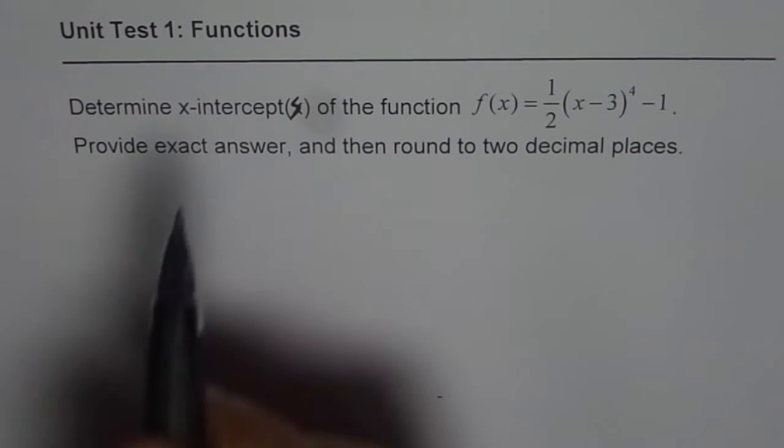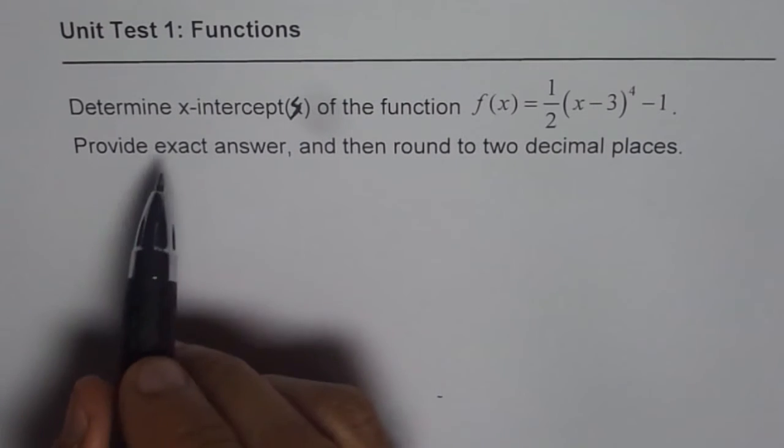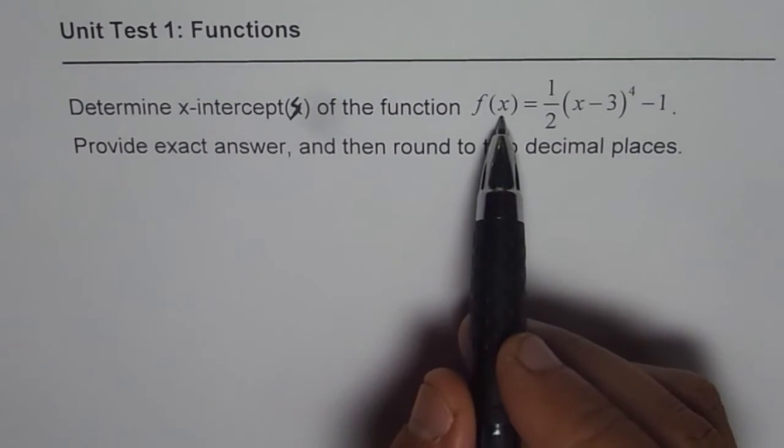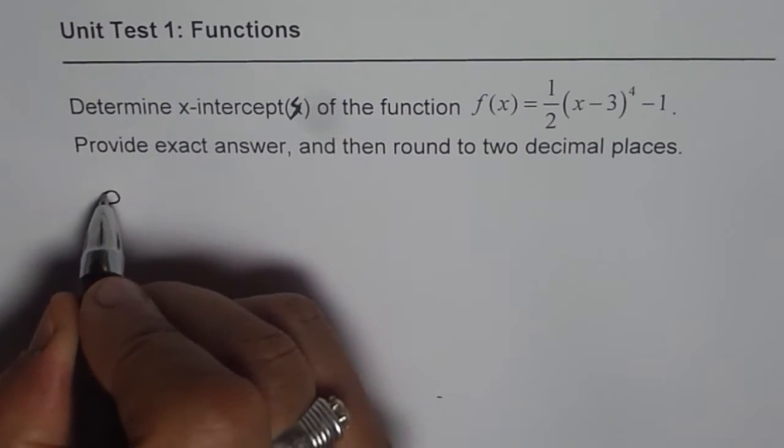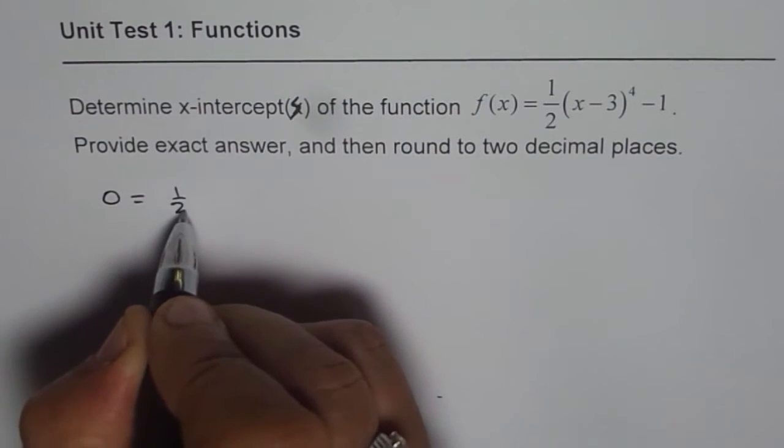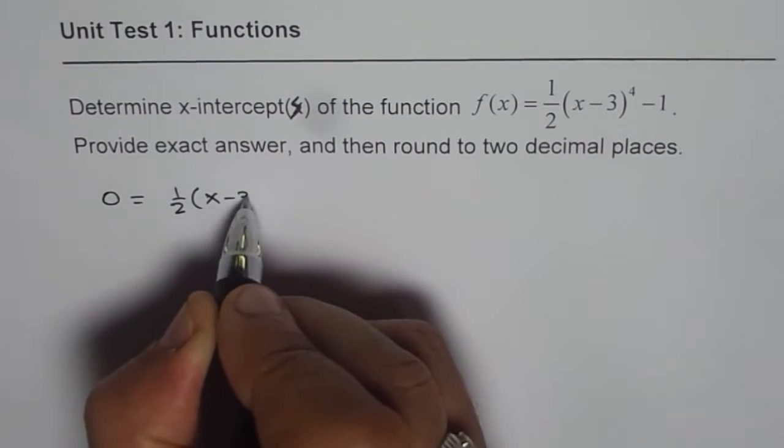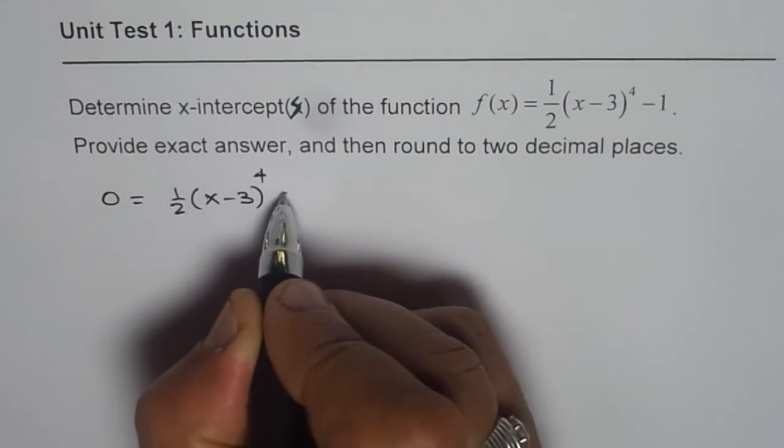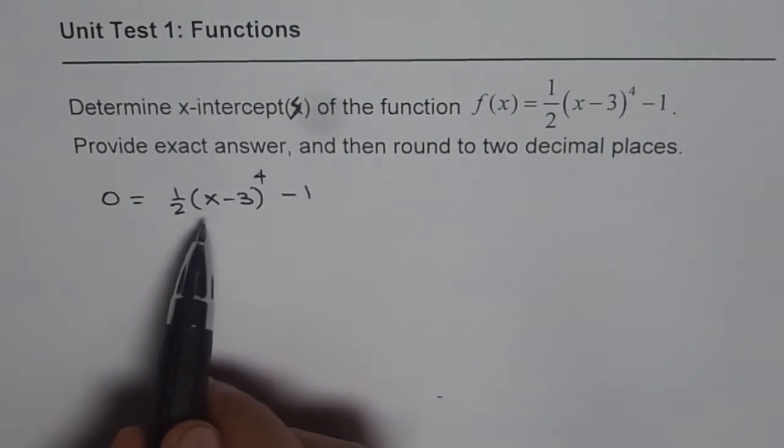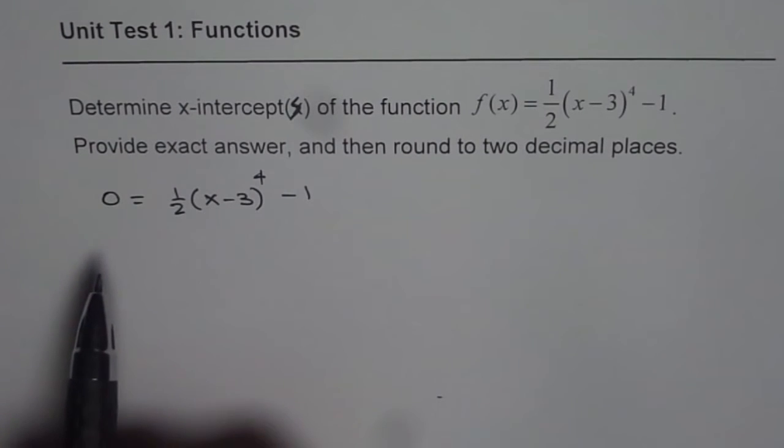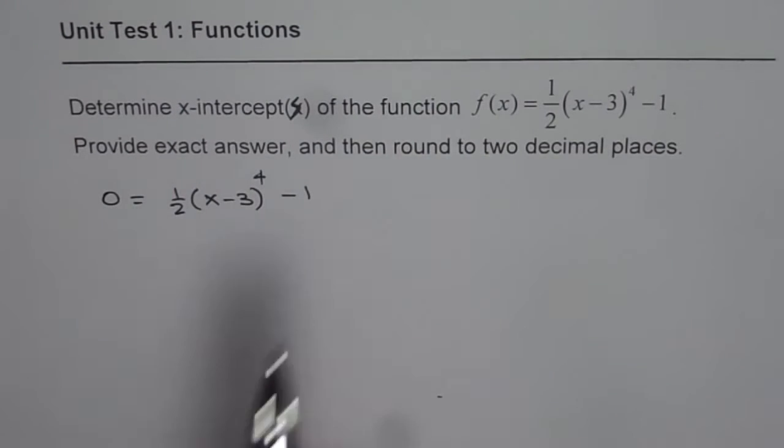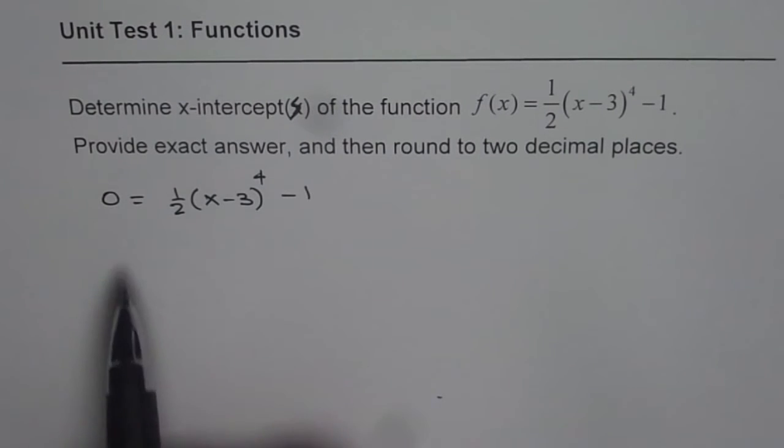Now when we are talking about x-intercepts, that means points where the value of the function is 0. So we can write 0 equals one-half of (x minus 3) to the power of 4 minus 1. Now we need to figure out what are the values of x for which the value of the function is 0. So we can rearrange and calculate.